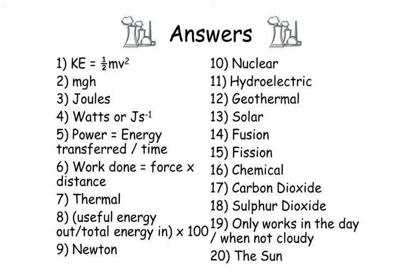Number seventeen: carbon dioxide. Number eighteen: sulfur dioxide. Number nineteen: only works in the day or when not cloudy. And finally, number twenty: the sun.